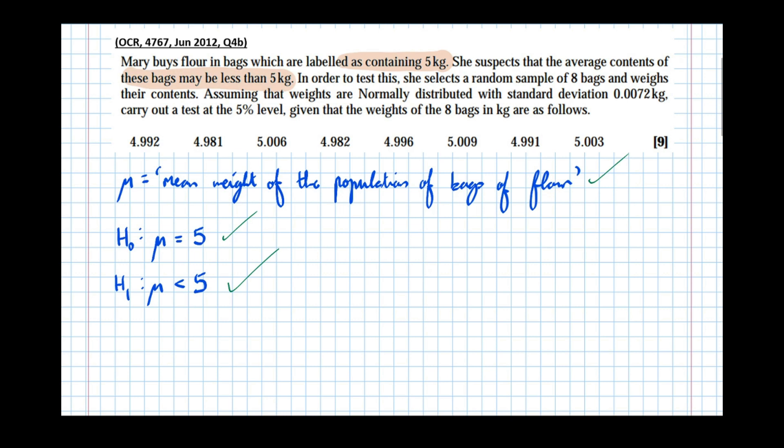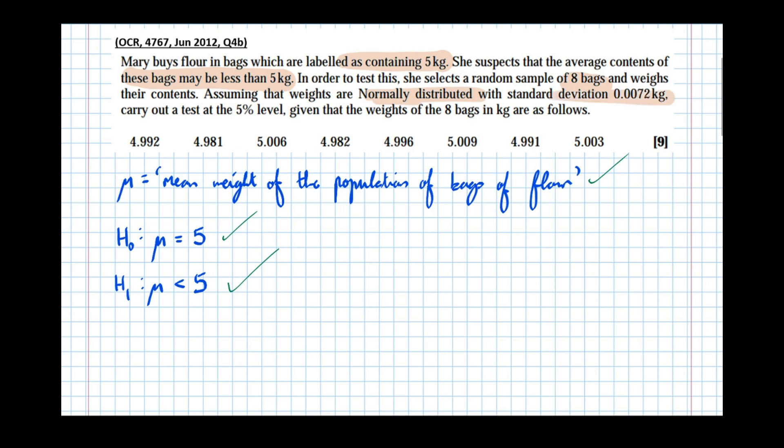The next bit of information: she selects a random sample of 8 bags, assuming the weights are normally distributed with standard deviation 0.0072. Let's get that information down. So X, which is the weight of a flour bag, has a normal distribution. We expect it to have mean 5, assuming the null hypothesis is true. The standard deviation is 0.0072. Therefore the variance, and this is important, is the standard deviation squared. Quite often in exam questions they'll try and catch you out like this.